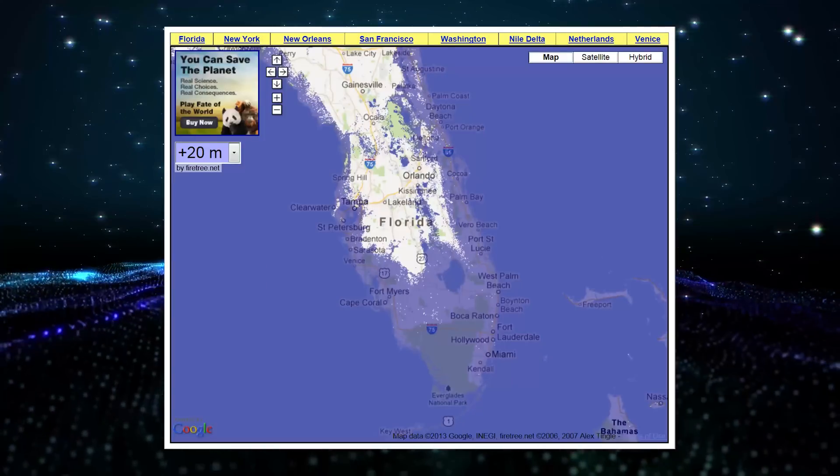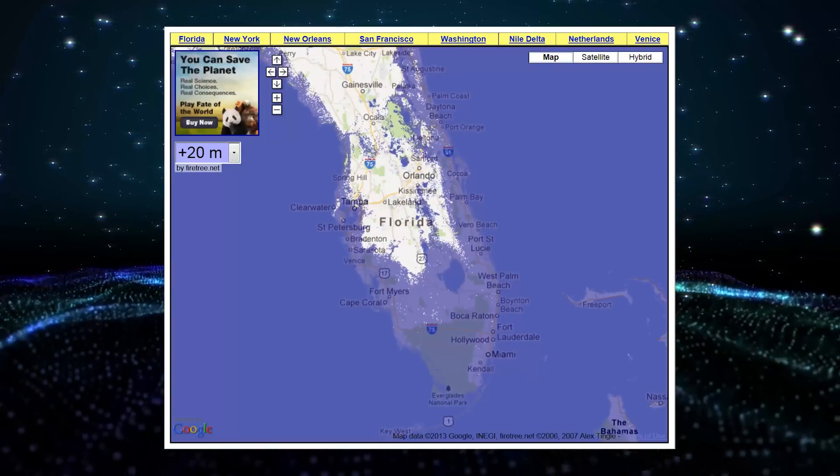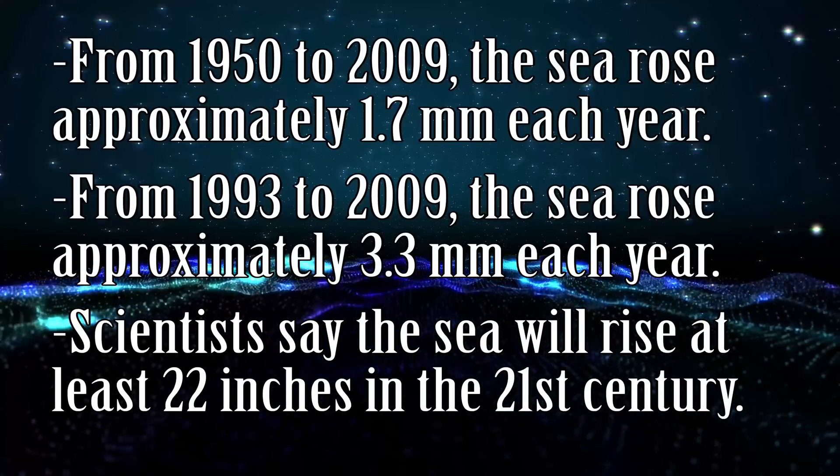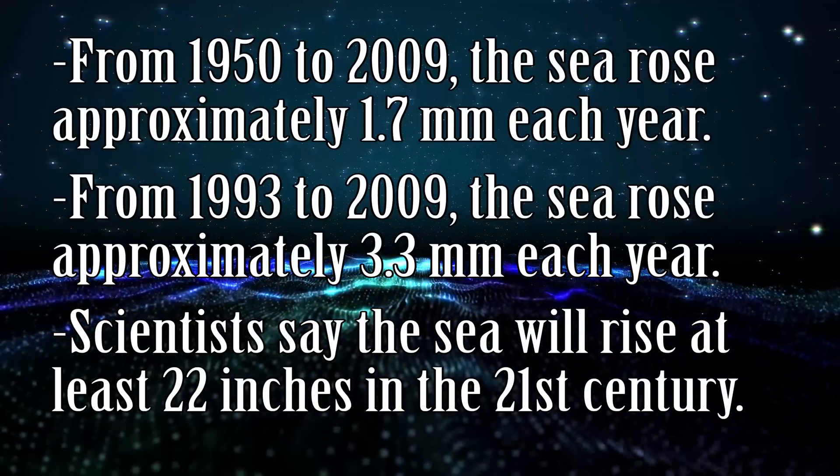Since 1870, the sea has risen over 7.7 inches, and the rate at which it is increasing is exponentially going up. The sooner we stop using oil, the better.